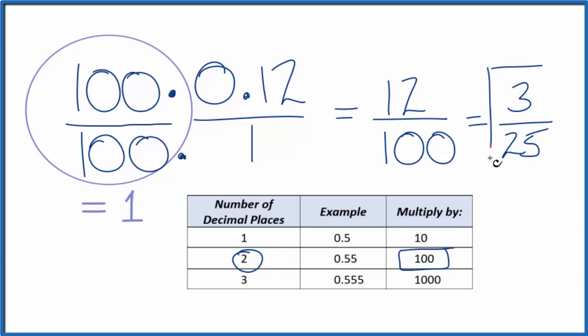So 0.12 expressed as a fraction is 3/25. We can't reduce this any further. That's how you convert 0.12 into a fraction. This is Dr. B. Thanks for watching.